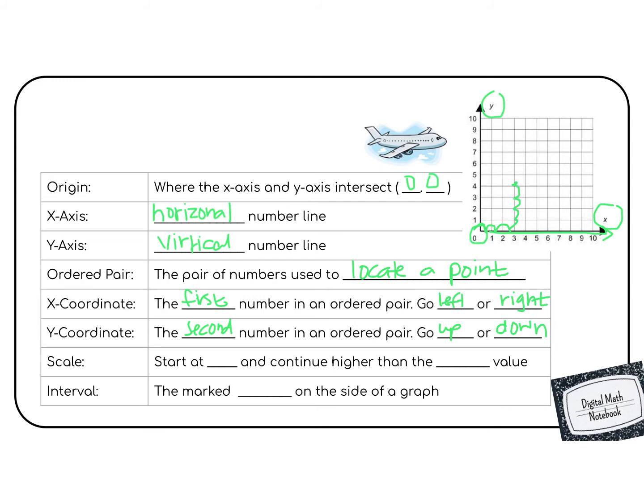There are two other words that I want to talk about before we continue on, and that is the word scale. A scale means our number line here on the bottom. We start at 0, and we go all along, in this case, to the number 10. A scale starts at 0, and it continues higher than the highest value, which means that if we were plotting a point 11, 2, then we couldn't use this graph because 11 would be off of our scale over here. So it always goes higher than our highest value.